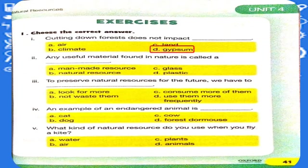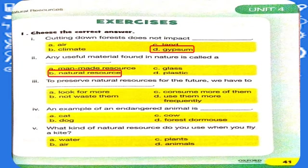Number two: any useful material found in nature is called a dash. A. Man-made resource. B. Natural resource. C. Glass. D. Plastic. And our answer is B — natural resource. Number three: to preserve natural resources for the future, we have to dash. A. Look for more. B. Not waste them. C. Consume more of them. D. Use them more frequently. And our answer is B — not waste them.